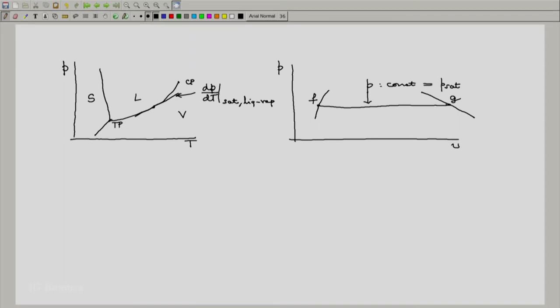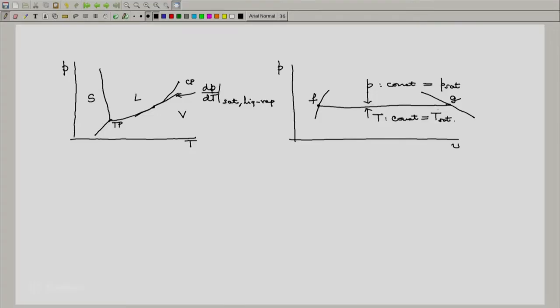And because we have a two-phase situation here, this line also means that it is an isothermal line. So T is also constant and equals the corresponding saturation temperature. Now let us look at this process from f to g.